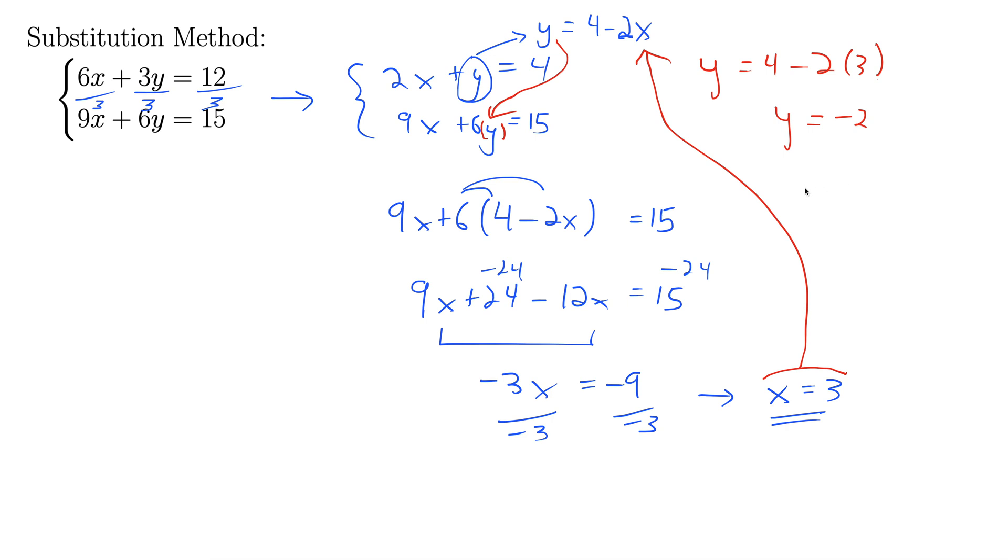All right, so our answer then, as an ordered pair, put that over here. Okay, remember the x goes first and then the y, so x is 3, y is negative 2. There we go.